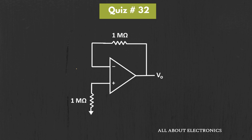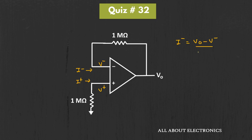Let's say I+ and I- are the bias currents for the inverting and the non-inverting terminals, and the voltages at these two nodes are V+ and V- respectively. We can write the current I- as (Vout - V-) divided by 1 megaohm. Similarly, the current I+ will be equal to (0 - V+) divided by 1 megaohm.